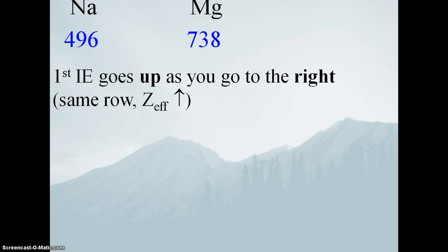The reason why the first ionization energy of magnesium is greater than that of sodium is pretty much the exact same explanation as to why magnesium is smaller than sodium. Going from left to right across a row, the outermost electrons are in the same orbital but they're drawn closer. You cannot simply say the reason is because magnesium is to the right on the periodic table — that's the answer, not the reason.